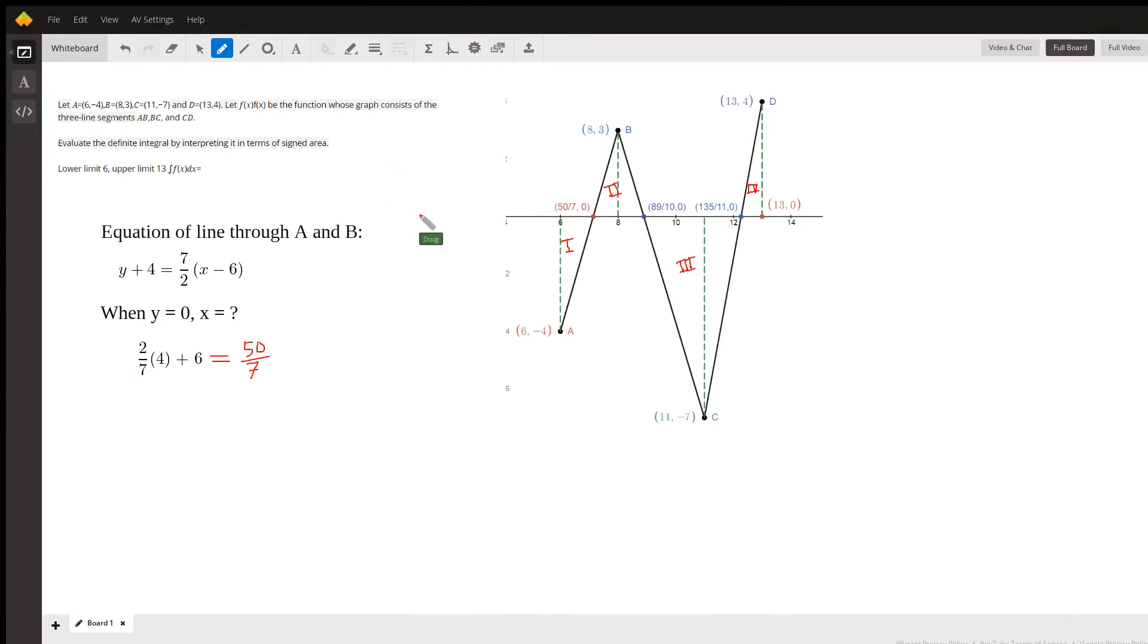Okay, I'll get you started on this problem. Over here is a graph depicting the situation. We've got points A, B, C, and D joined by these three line segments. And we want to interpret the definite integral from 6 to 13 of f(x) dx.